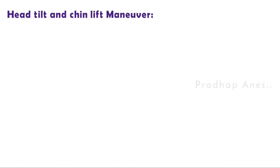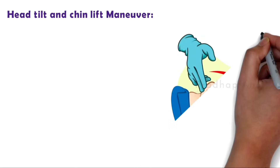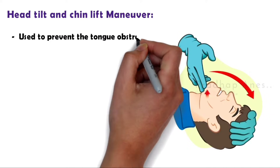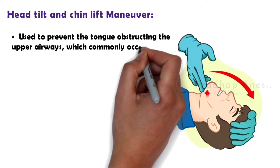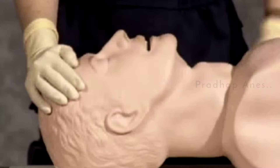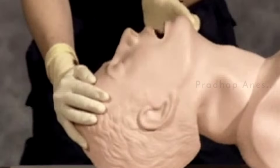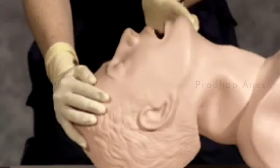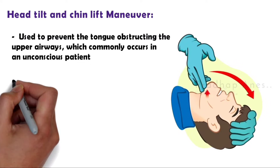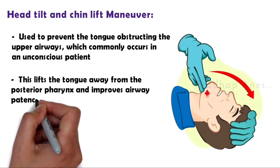Now let's see how to perform the head tilt and chin lift maneuver. The head tilt chin lift maneuver is a procedure used to prevent the tongue from obstructing the upper airways, which commonly occurs in an obtunded or unconscious patient. Tilt the patient's head back by pushing down on the forehead. Place the tips of your index and middle fingers under the chin and pull up on the mandible, not on the soft tissues, because pressure to the soft tissues of the neck may obstruct the airway. Be sure to pull up only on the bony parts of the mandible. This lifts the tongue away from the posterior pharynx and improves airway patency.